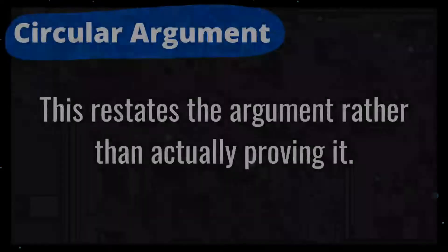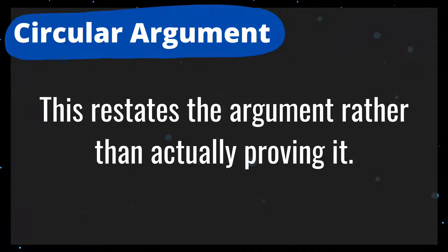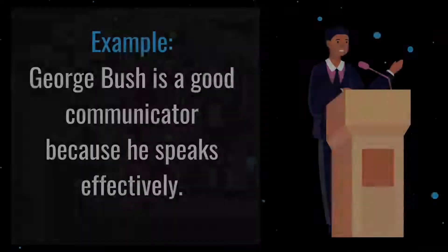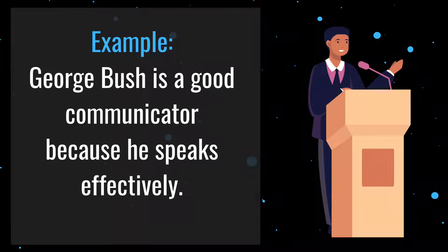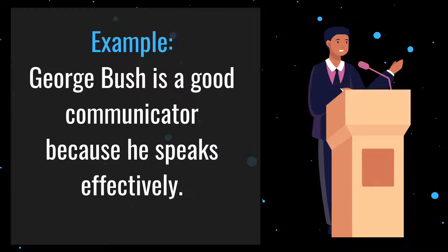Number 6 is circular argument. This restates the argument rather than actually proving it. For example: George Bush is a good communicator because he speaks effectively. In this example, the conclusion that Bush is a good communicator and the evidence used to prove it — he speaks effectively — are basically the same idea. Specific evidence such as using everyday language, breaking down complex problems, or illustrating points with humorous stories would be needed to prove either half of the sentence.